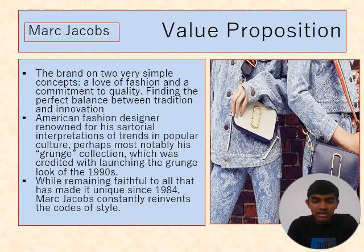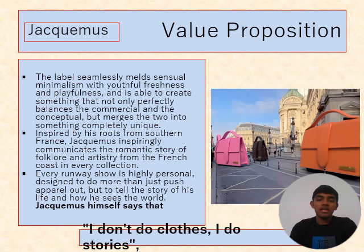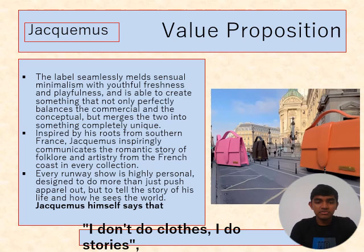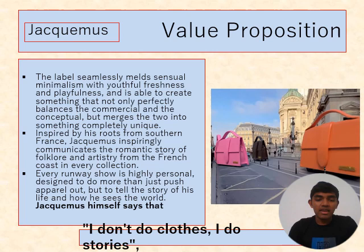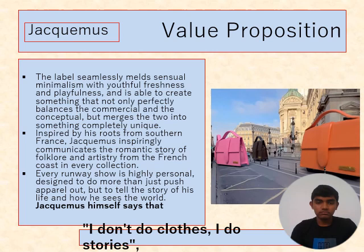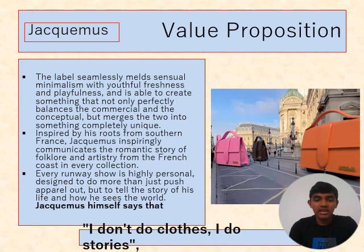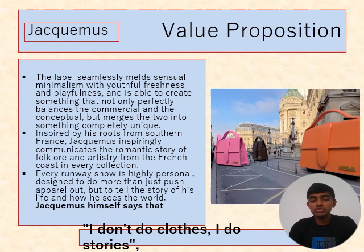Here is the value proposition for Jacquemus. The label seamlessly melds sensual minimalism with a youthful freshness and faithfulness. It aims to create something that not only perfectly balances the consumer's wants but merges the two into something completely unique. Inspired by his roots in southern France, Jacquemus springlike communicates a romantic story of flora and artistry from the French countryside in every collection and runway show. It is a highly personal design to do more than just put an outfit out, but to tell the story of his life. Jacquemus himself says: 'I do not do clothes, I do stories.'